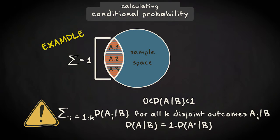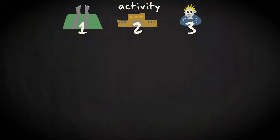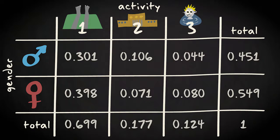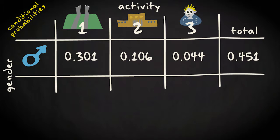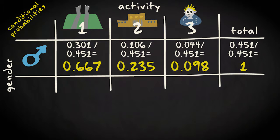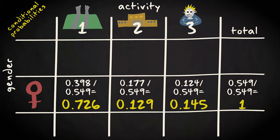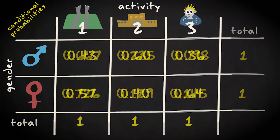Let's apply this to an example. You have made a count of different activities by the people on your beach, which you distinguished by gender, and you have turned it into a table with probabilities. The conditional probabilities for the three activities given that the person were male would be given by dividing the respective joint probabilities with 0.45, and for females by dividing with 0.55. The resulting conditional probabilities for the activities given gender are shown here.